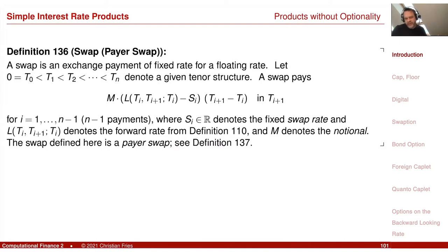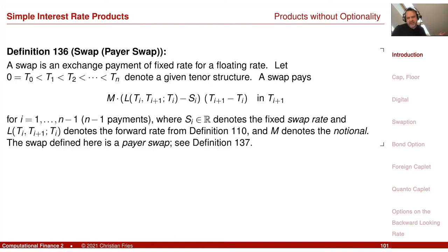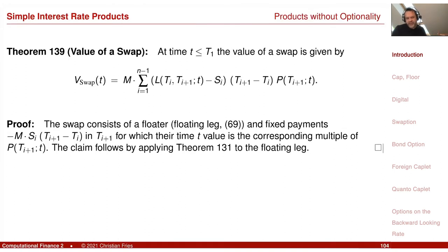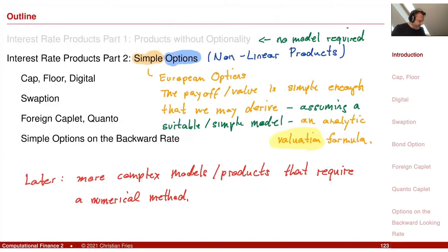A small reminder: the swap is the financial product that exchanges a floating rate payment and a fixed payment at different times, where the time discretization fits to the index — fixed at the beginning of the period, paid at the end of the period. We also had the valuation of the swap, so we can express at every time t the value of the swap using the forward rate and the zero coupon bond price.